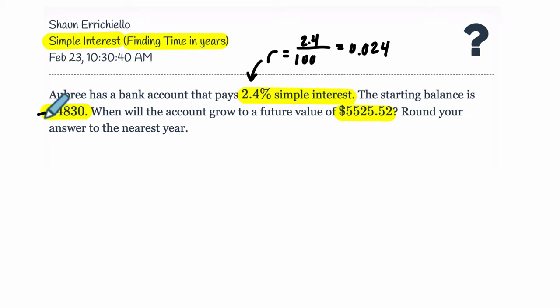Let's label these things as well. The starting balance, this number right here, this is P, that's our principal, and it's $4,830. And we want to know when will the account grow to a future value of this. So this is our goal, our future value. When will our balance rise up to this amount?